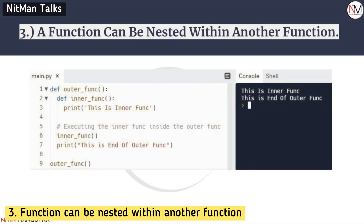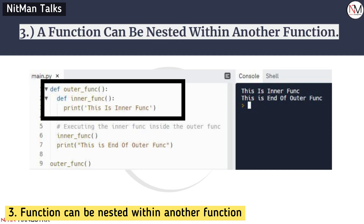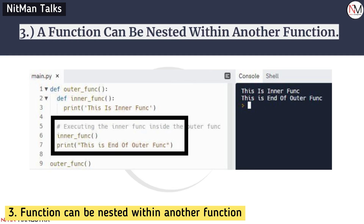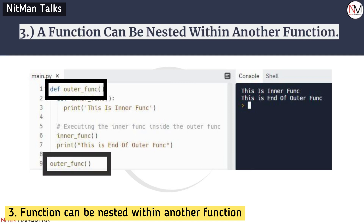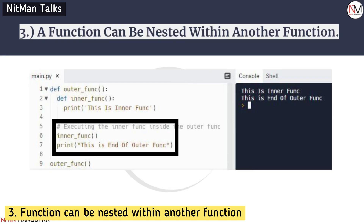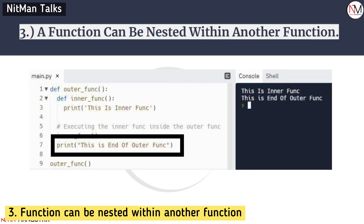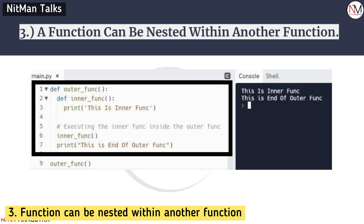We can define nested functions in Python. As you can see, I have an outer function and inside it an inner function with a print statement. When I call the outer function, control goes to the outer function first, then line 6 executes because the inner function is called there. The inner function's print statement runs, and then the 7th line from the outer function is printed. So this is the entire function run. I hope the execution flow is clear and you understand how nested functions can be used.